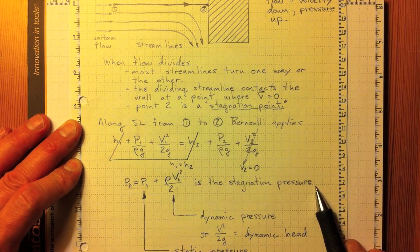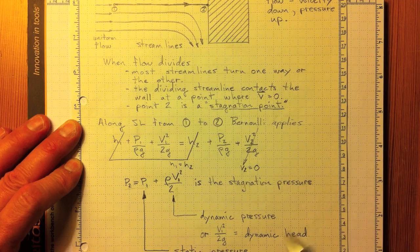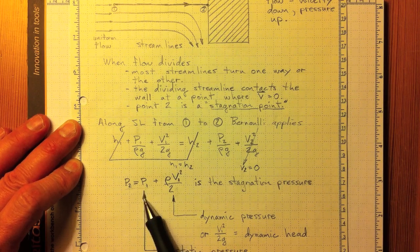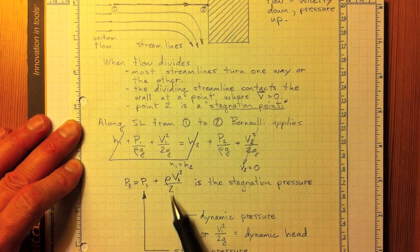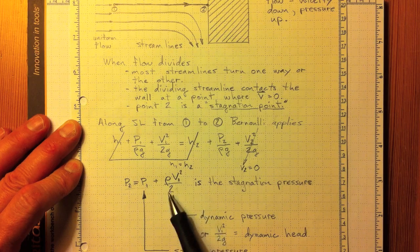That's the stagnation pressure and it's higher than ambient pressure. It's made up of two components. The static pressure or static head, that's this p1, the pressure in the flow throughout, and the dynamic head or dynamic pressure, the rho v squared over 2.